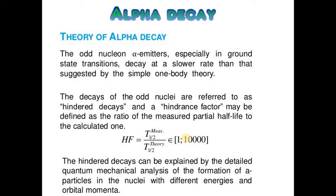A hindrance factor may be defined as the ratio of the measured partial half-life to the calculated one. The hindered decays can be explained by the detailed quantum mechanical analysis of the formation of alpha particles in the nuclei with different energies and orbital momentum.